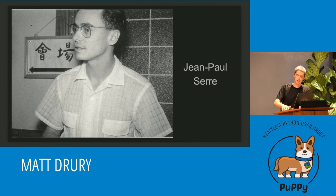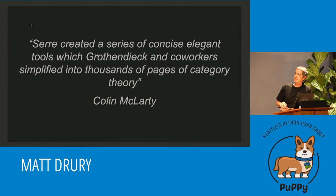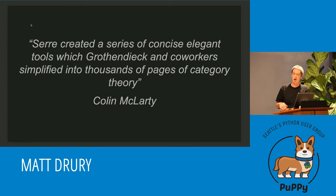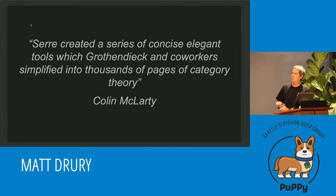So that's in contrast to Grothendieck. Serre created a series of concise and elegant tools, which Grothendieck and coworkers simplified into thousands of pages of categorical theories. Grothendieck's work — he wrote two things with his colleagues, called EGA and SGA. I can't tell you what those stand for because it's French. But those are imposing documents, thousands of pages. He was reworking some stuff that Serre did, which is brief and elegant.